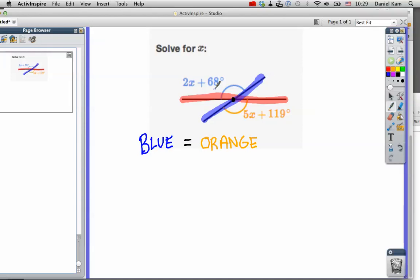The blue one equals 2x plus 68, and the orange one equals 5x plus 119.